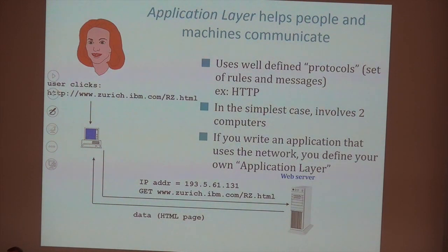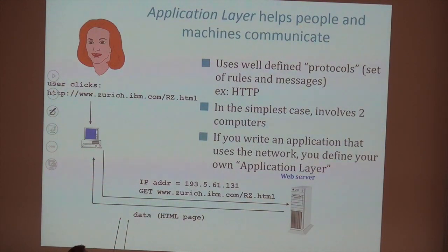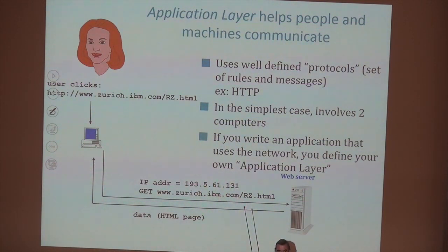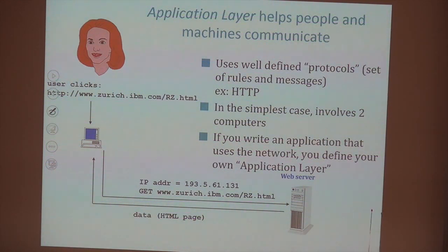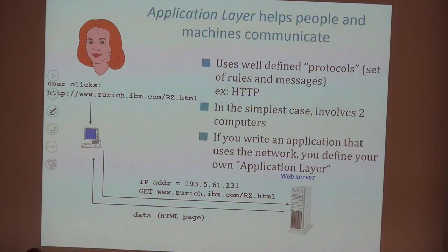The application layer is the visible part of the internet — the collection of all applications we use. The most popular one is perhaps the web. The web is based on a protocol called HTTP, which means Hypertext Transfer Protocol. When the web was invented, it came with two ideas. One is hypertext: a text on which you can click on some words, and when you click, there is a link that causes something to happen, like opening another page. This was called a hypertext.